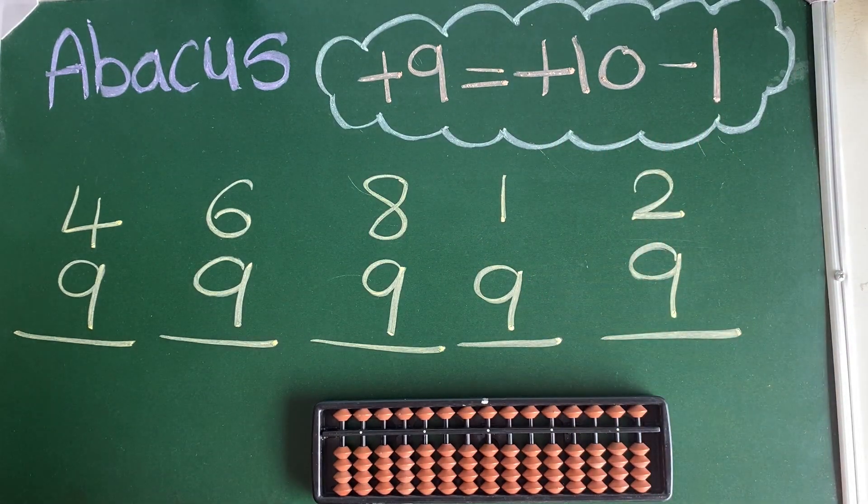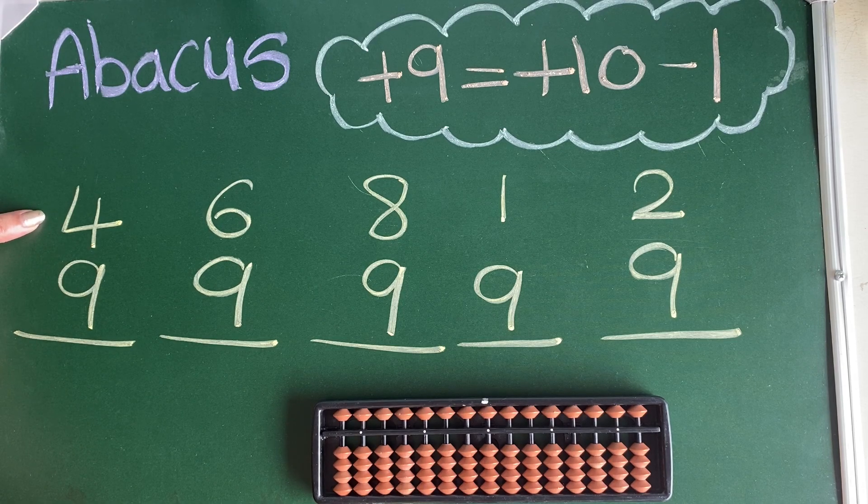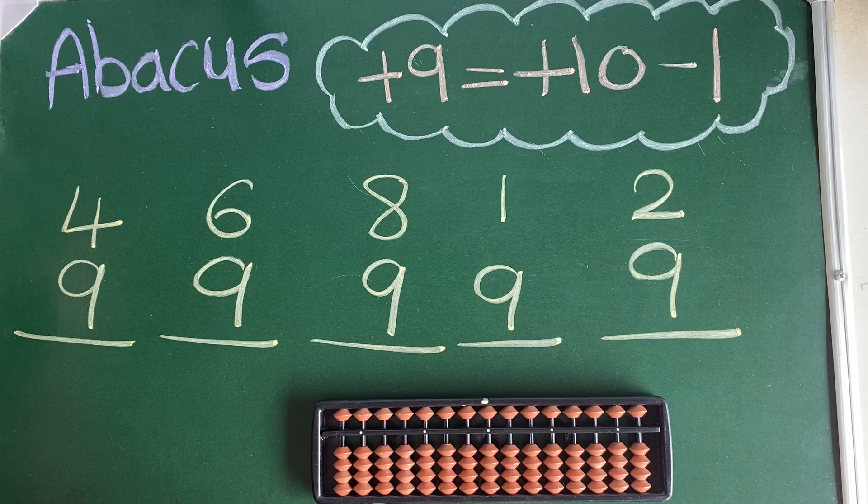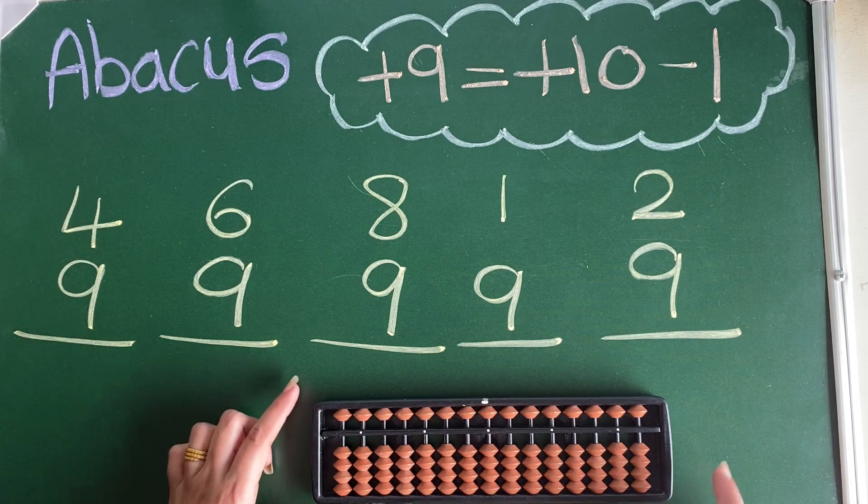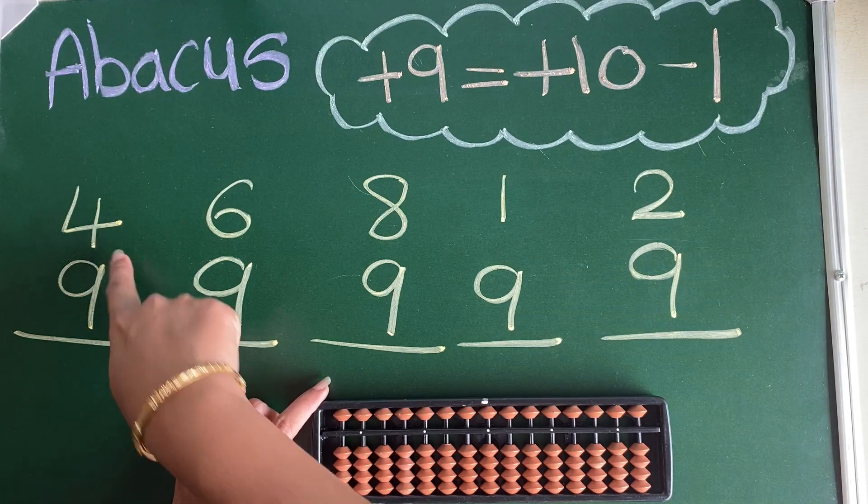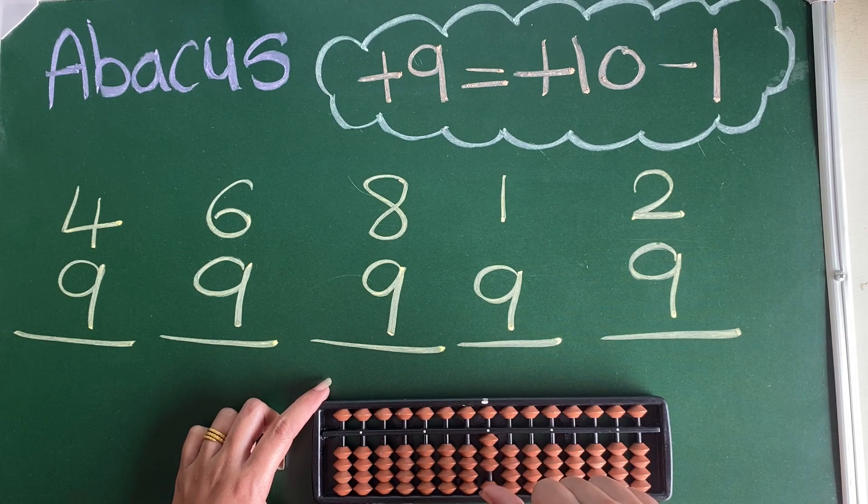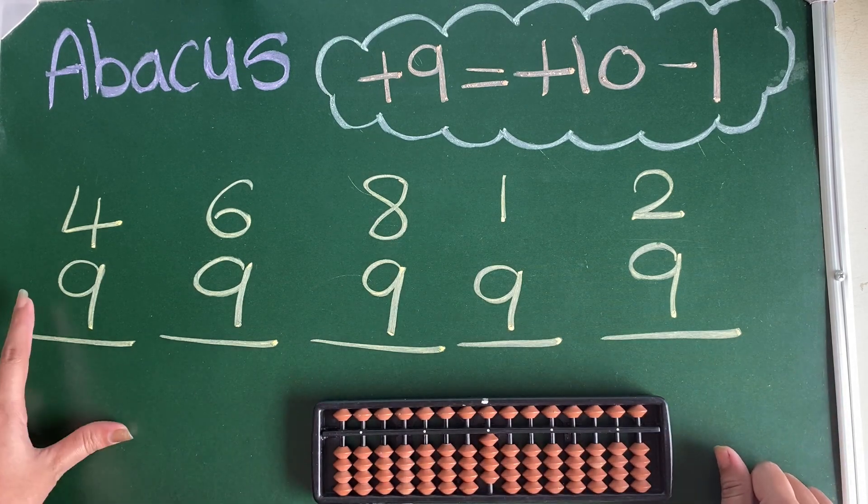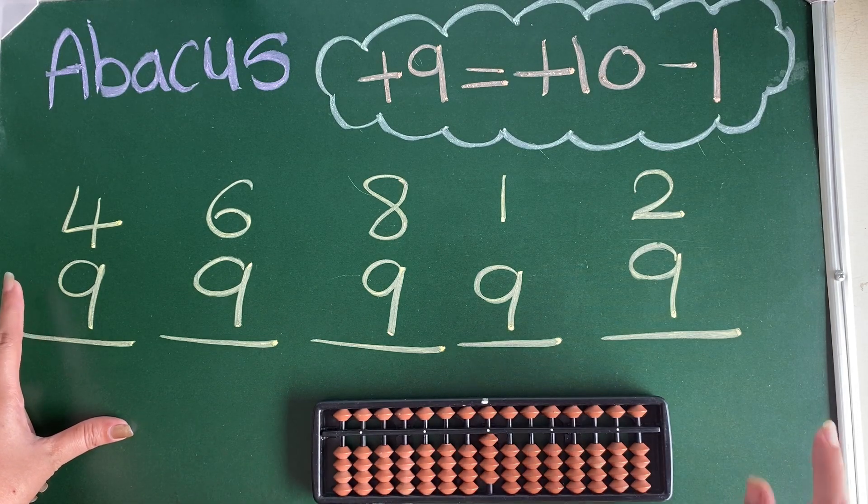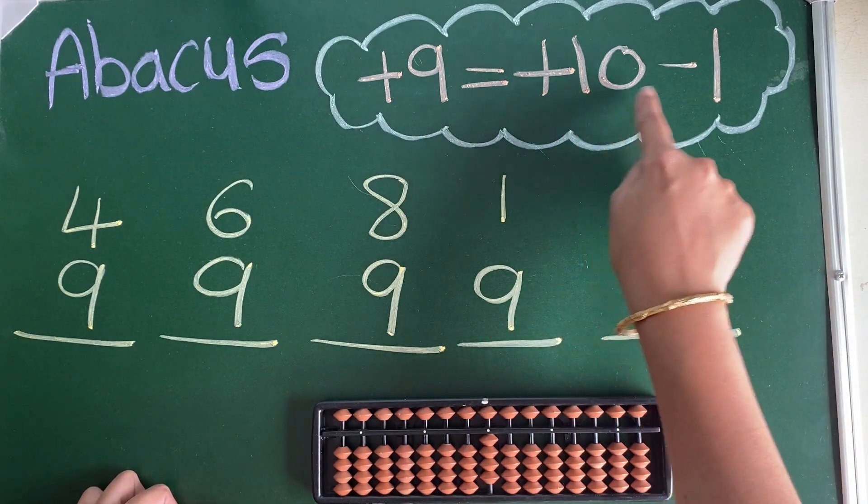Let's start with our first sum. The first number is 4. For the first number, this digit is in the unit place, so this is our ones place. Let's count up 4, use your thumb and count 1, 2, 3, 4. For 9, I don't have enough bits in one place, so what will I do? I will use the concept that is plus 10 minus 1.